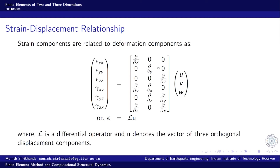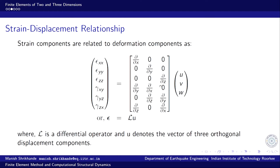These are the three direct strains related to deformation components. The shear strains are: gamma_xy = del(u)/del(y) + del(v)/del(x), the shear distortion in the xy plane; gamma_yz = del(v)/del(z) + del(w)/del(y), distortion in the yz plane; and gamma_zx = del(u)/del(z) + del(w)/del(x), distortion in the zx plane.